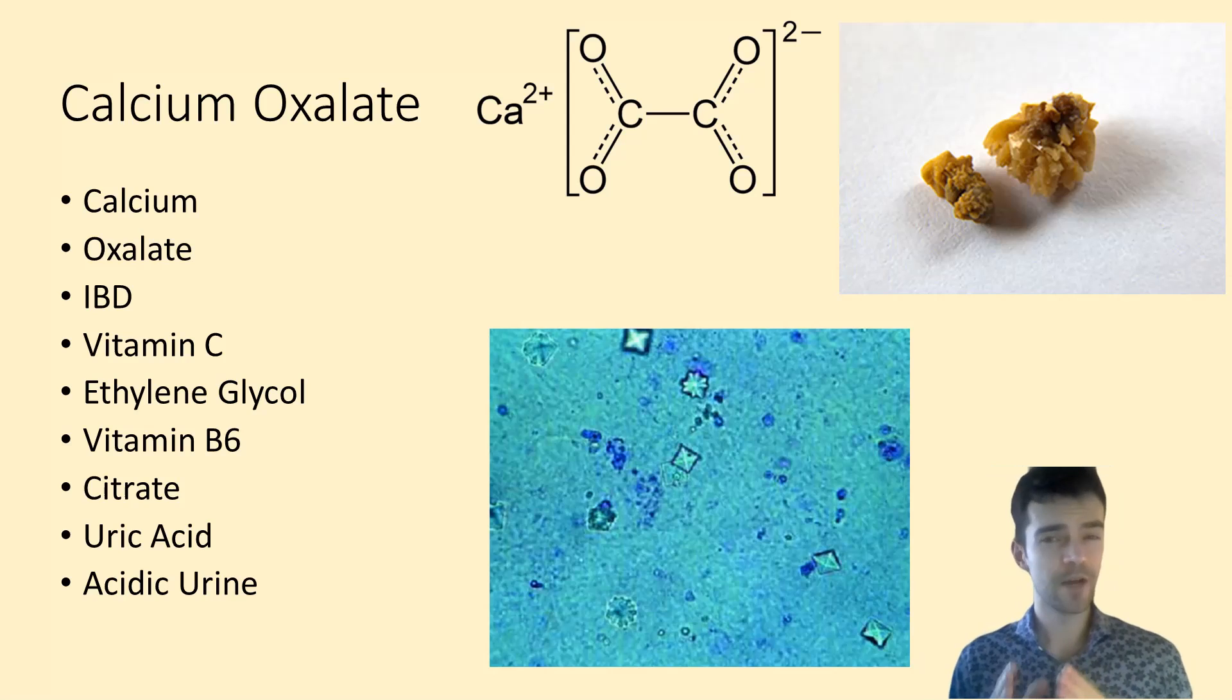Vitamin C can predispose you to calcium oxalate stones in two ways. One, it's converted to oxalate in the body after you eat it. Two, it creates an acidic environment—vitamin C is also known as ascorbic acid. When this acidic environment forms, calcium oxalate likes to precipitate. Your kidney gets rid of the acid in your body, so whenever your blood is acidic, it peeds that acid out, forming an acidic environment inside the kidney tubules where stones can form.